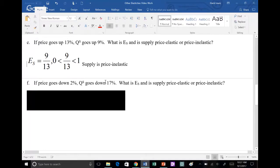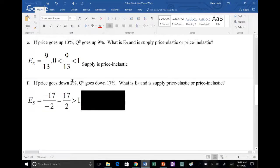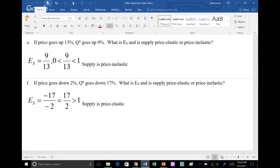One more to go. If the price goes down 2%, quantity supplied goes down 17%. What sign do the 17 and the 2 have? That's right, they're both negative. Where does the 2 go? Denominator and the 17 in the numerator. But what kind of 2 and what kind of 17? Negative. Remember when you divide two negatives, the negatives cancel out and you get a positive answer, 17 over 2. If you have a fraction with a numerator larger than the denominator, it's always bigger than 1. If E sub S is bigger than 1, that means supply is? Price changes less than quantity. Quantity is highly responsive. Correct, price elastic.